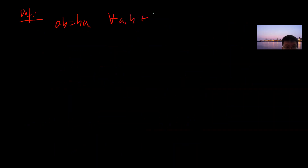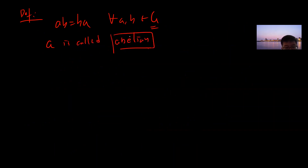A group G is called abelian if ab = ba for all a, b in G. The classification of finite abelian groups is one of the main successful results in group theory, and we will talk about that in the future.